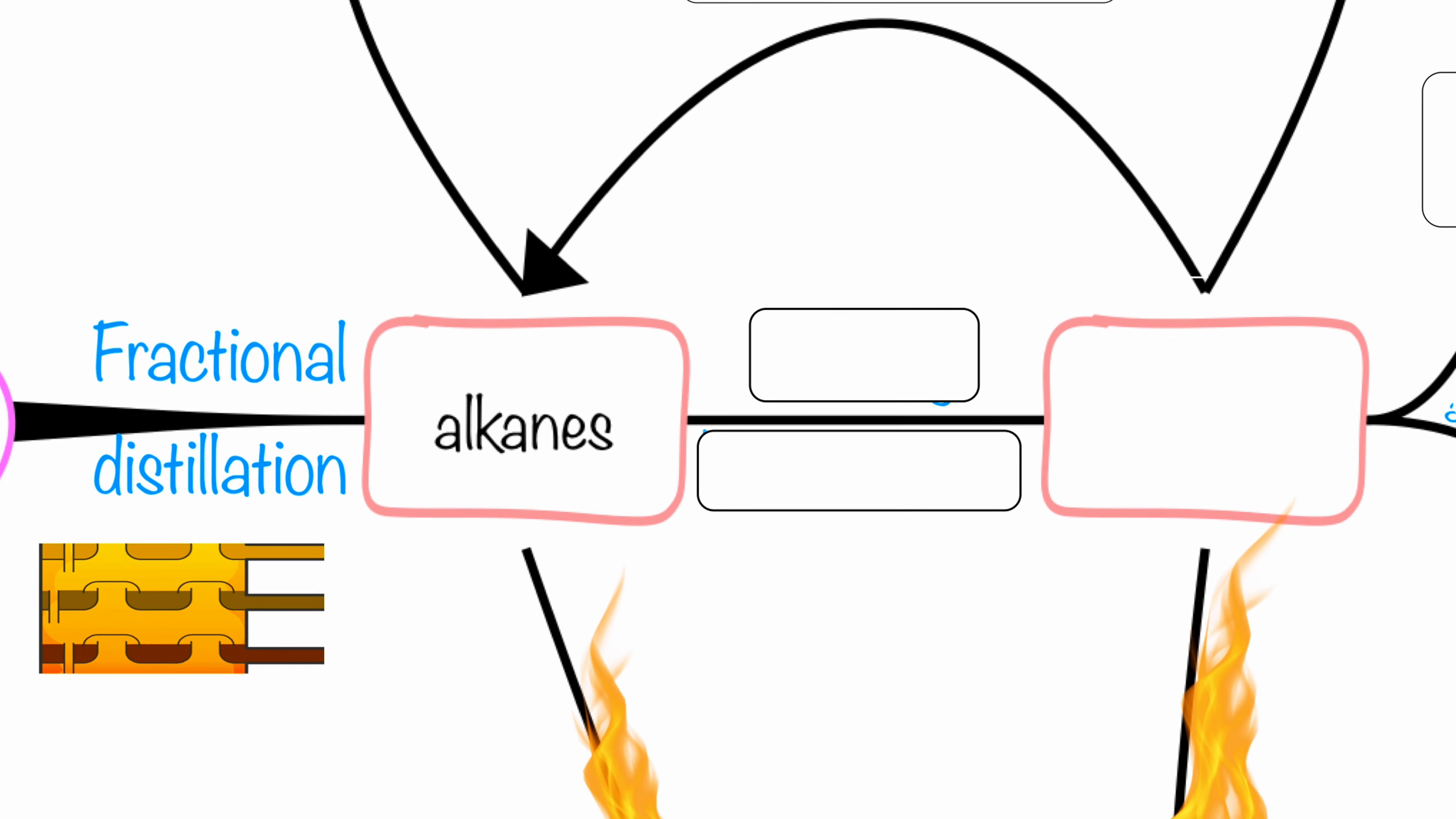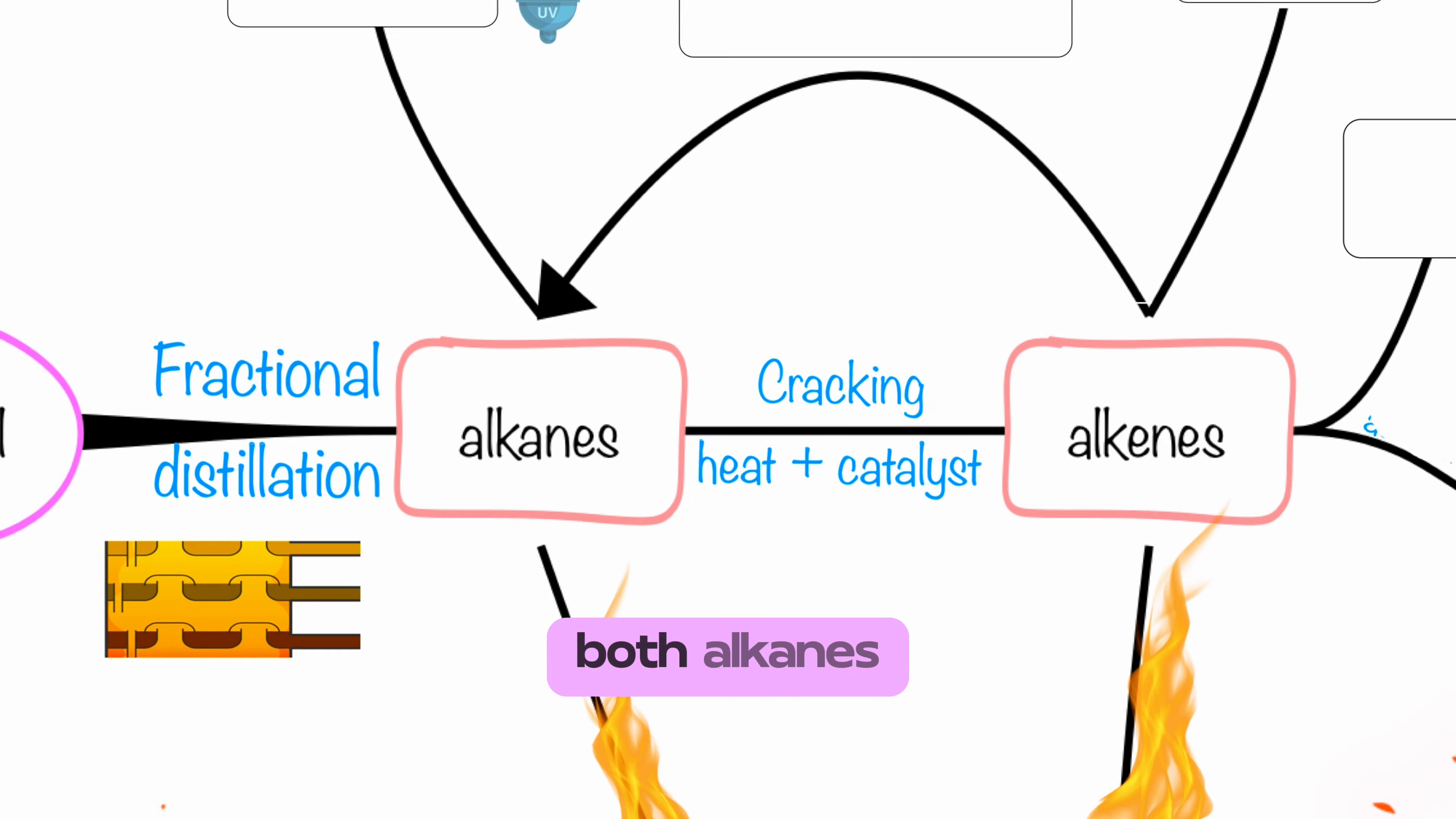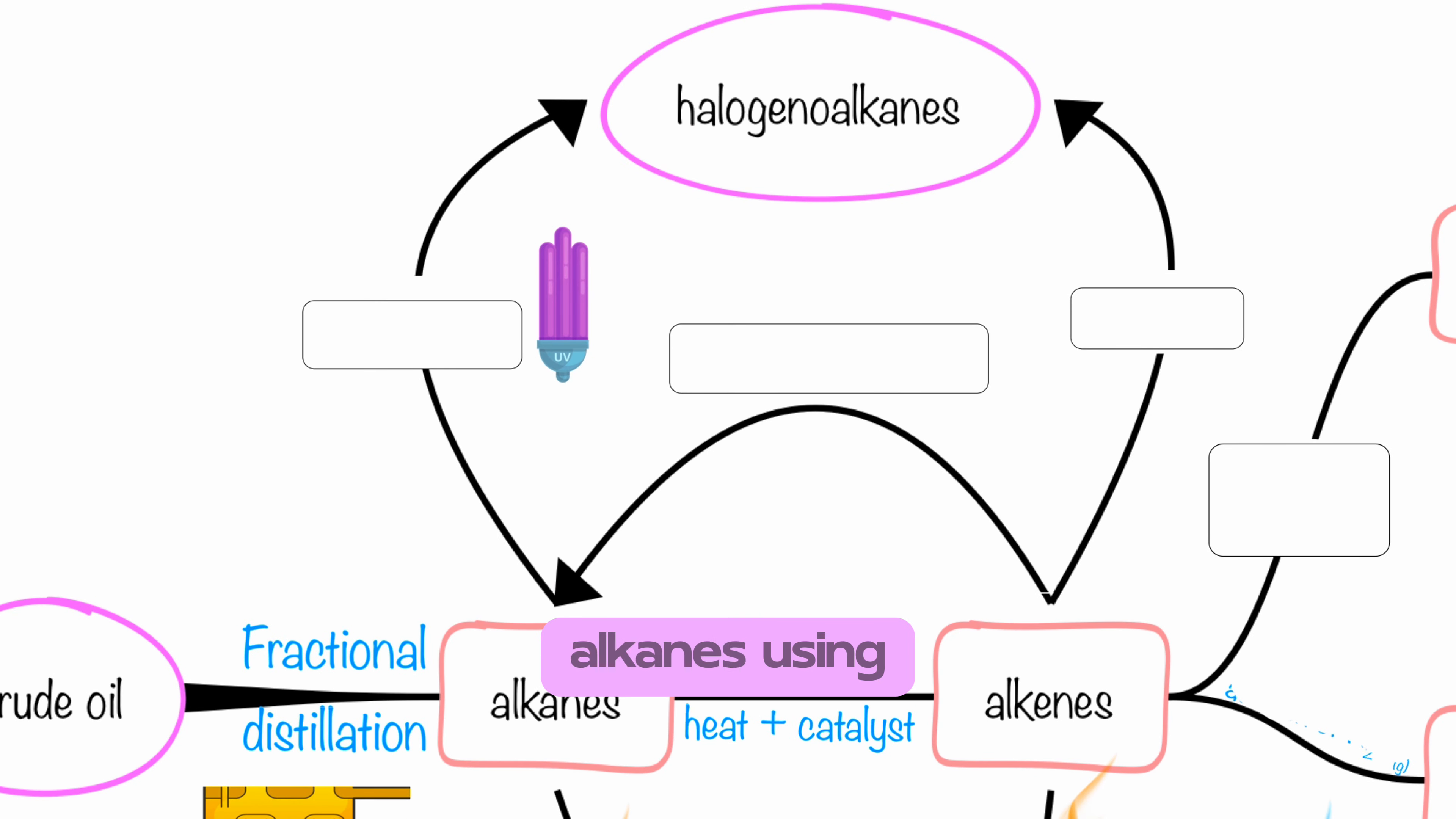Alkanes produced by fractional distillation can be converted to alkenes using cracking. Cracking requires high temperature and catalysts. Both alkanes and alkenes can be converted to halogeno alkanes using substitution reactions.